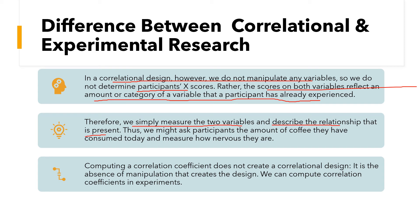You might ask participants how much coffee they have consumed today and measure how nervous they are. Maybe a person consumed one coffee, or two, or three — we just ask them and note it down. We measure our two variables without manipulating any variable; that is called correlational research. Computing a correlation coefficient does not mean it is correlational research. How we demonstrate the research is very important — manipulation is absent in correlational design, otherwise it is experimental research.